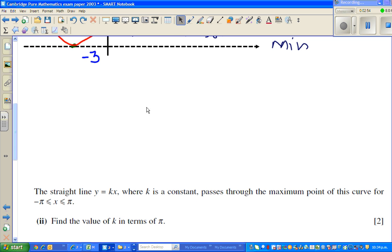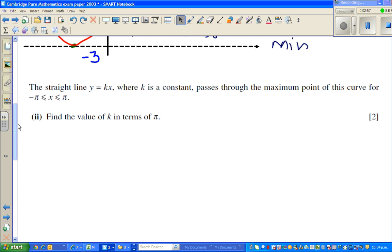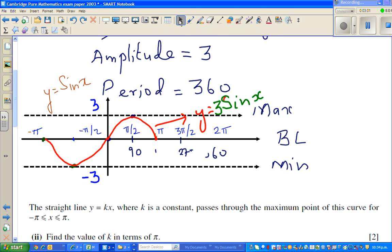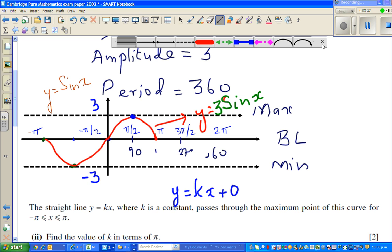Let me also do the question along with that. The question is, the straight line y equals kx, where k is a constant, passes through the maximum point. Now there is a line which is passing through, so let me draw the line. Now here the coefficient is, the y-intercept is 0, because I can write this as y equals kx plus 0.